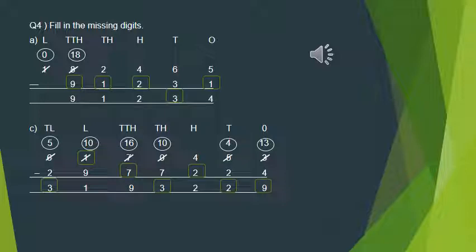At the next place we have 8. 8 minus what gives 9? Since 8 is smaller, we make it 18. 18 minus 9 gives 9. As we have borrowed from the lakh place, 1 becomes 0, and since there is no digit at the lakh place we leave it. So here we have found out the missing digits for Part A.